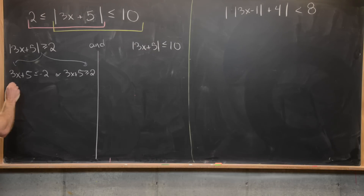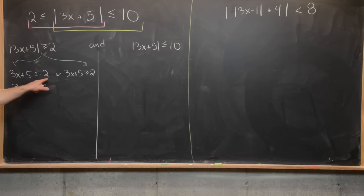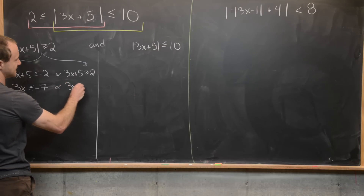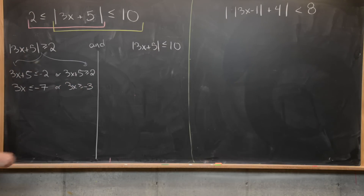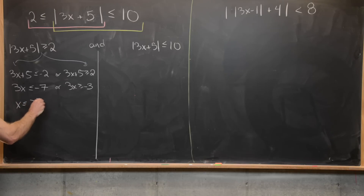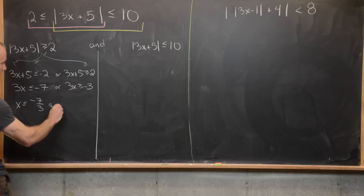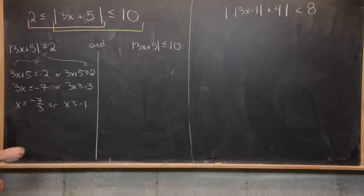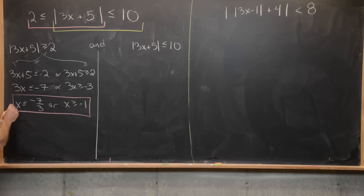Let's go ahead and solve each of these. We have 3x is less than or equal to negative 7, which we get from subtracting 5 from both sides, or 3x is bigger than or equal to negative 3, again from subtracting 5 from both sides. So now we get x is less than or equal to negative 7 thirds, or x is bigger than or equal to negative 1. Let's box these in pink — that is the solution to the pink underlined inequality.